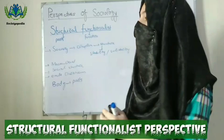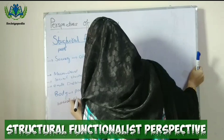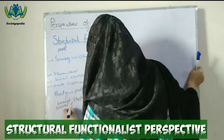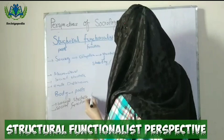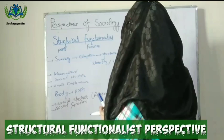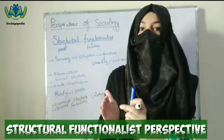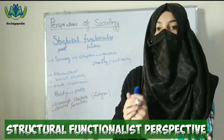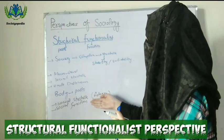The structural functionalist perspective focuses on social structure and social function. For example, take religion — religion is a social structure. It plays a role in maintaining our culture. Religion is a very important structure that performs a function in any society.